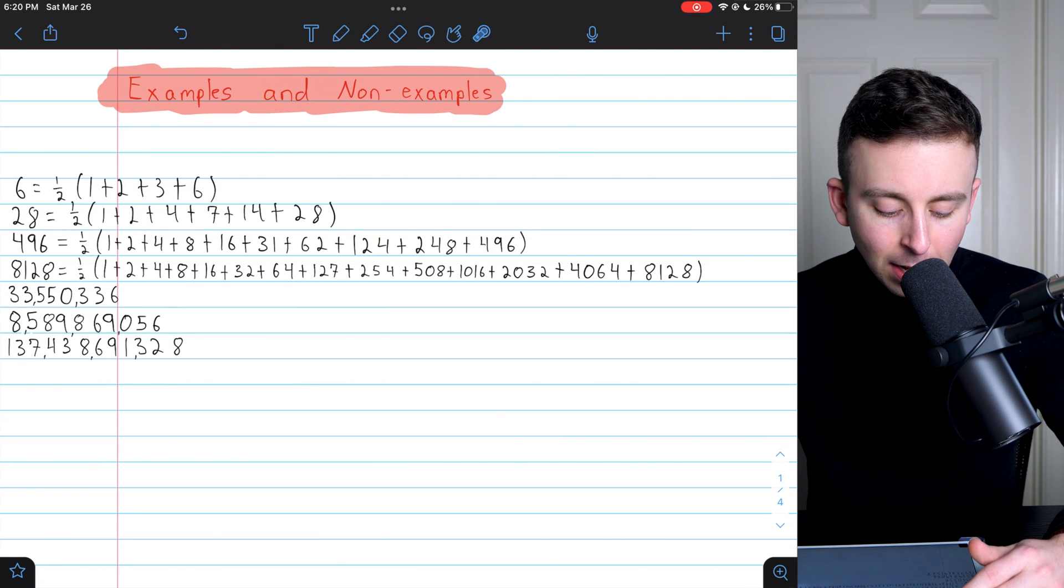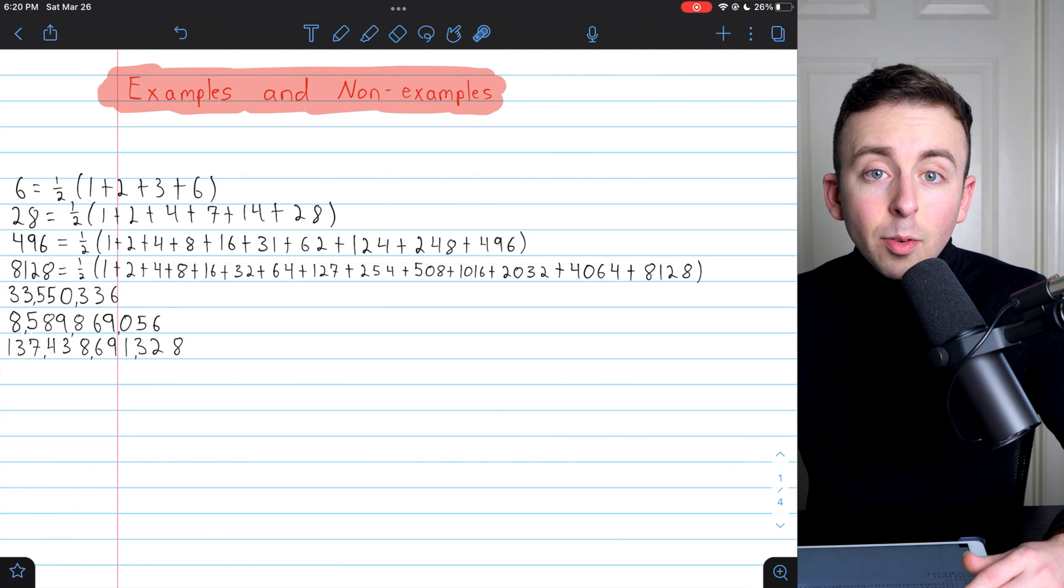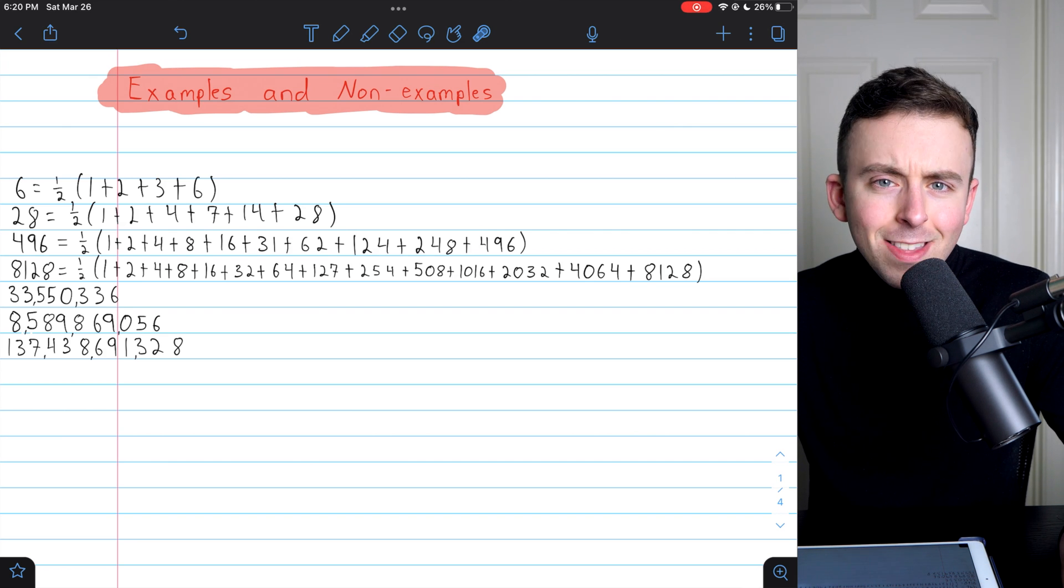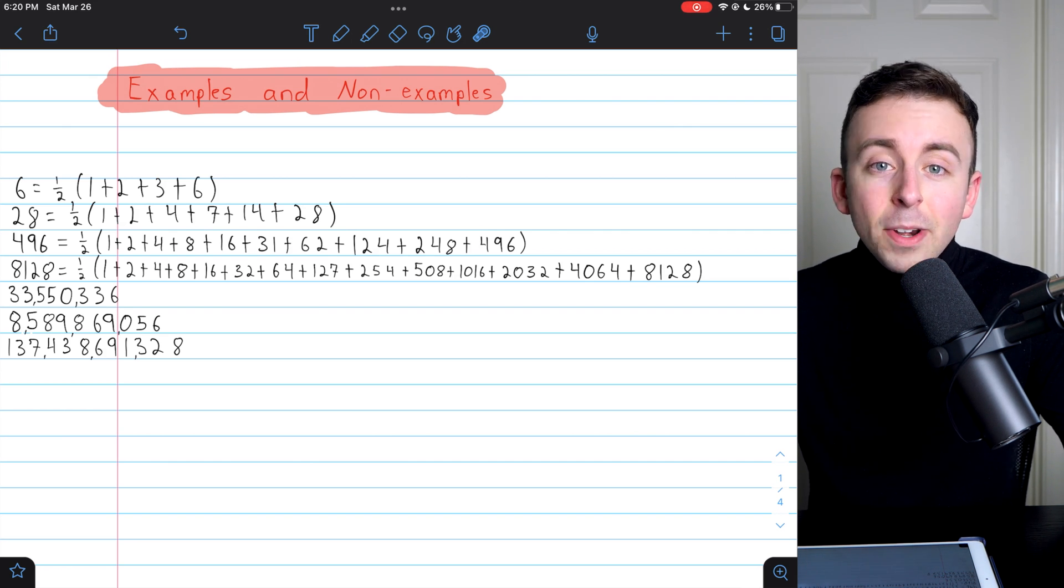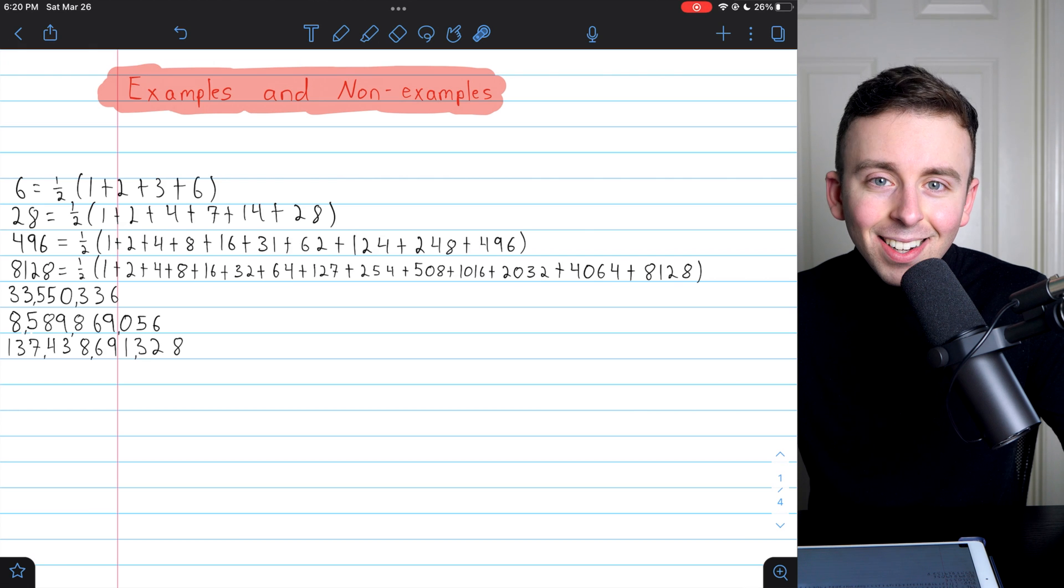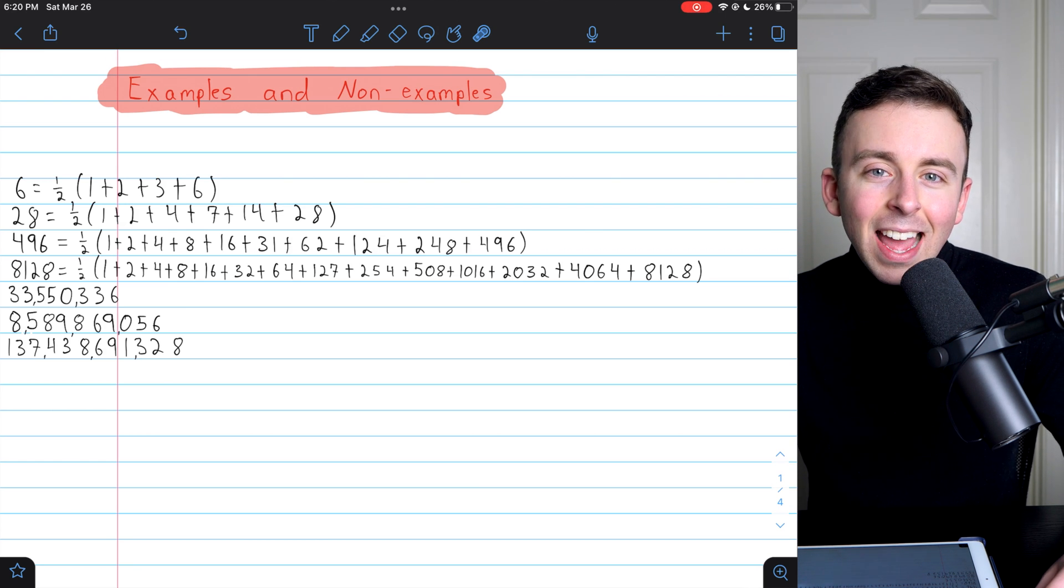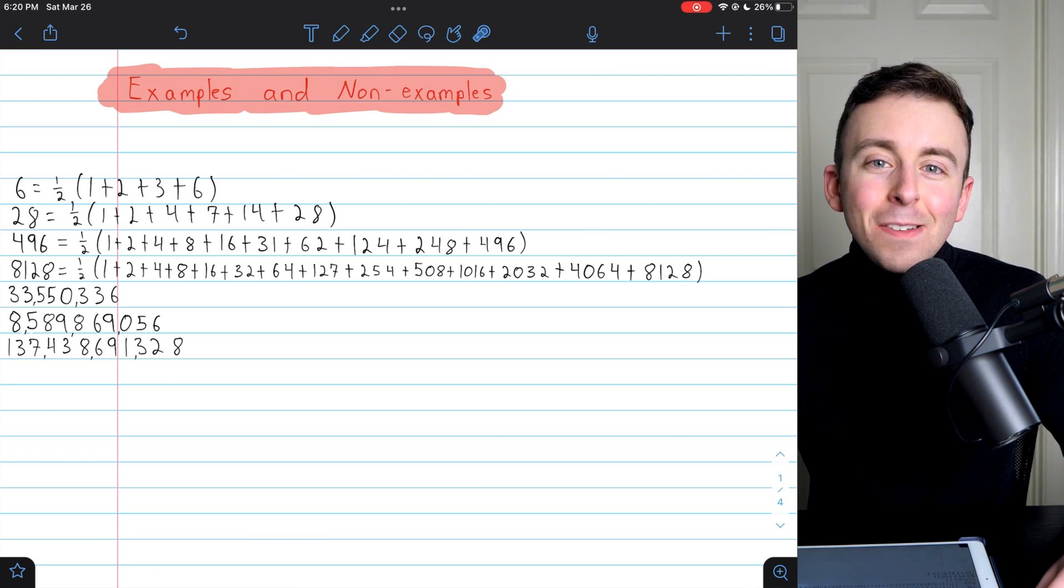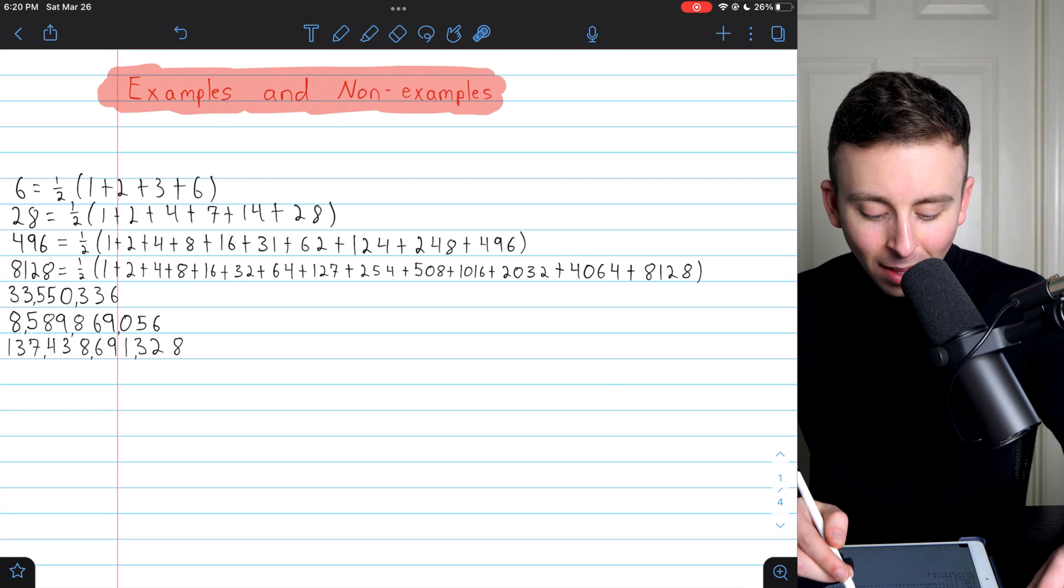For your curiosity, here are the next few perfect numbers. So in total, those are the first 7. You may wonder, how many perfect numbers are there? Well, we actually don't know. You may suspect that there are infinitely many, but we don't know if there are or not. So far, we only know of 51 perfect numbers at the time of recording.